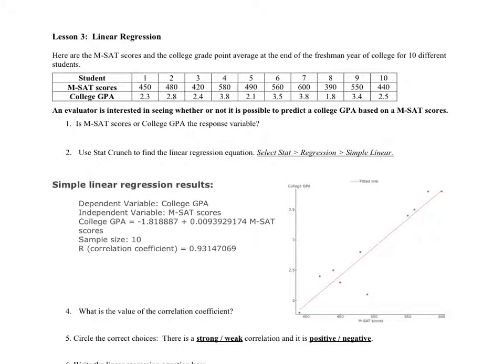Okay, in this video, I'll show you how to do linear regression, which looks at finding association between two quantitative variables. In this problem, we want to see whether or not it's possible to predict college GPA based on a student's math SAT score.